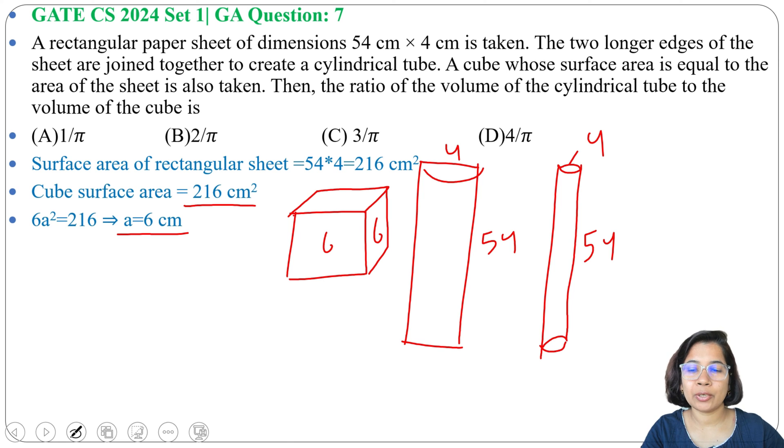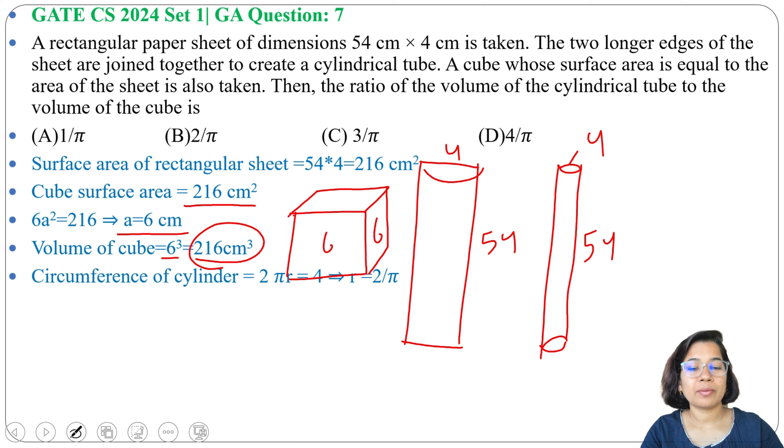Now from this we can find volume of the cube and volume of the cube formula is A³. So 6³ is 216 cm³. Now we will find for this cylindrical tube.